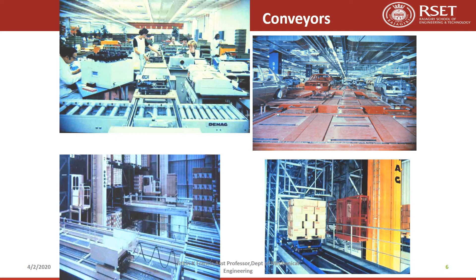Here we see the different types of conveyors. On the left top, we can see the roller conveyor in operation with people working between different stages. On the right side, we see a conveyor of a huge size used in an automobile industry. Conveyors are widely used in different kinds of industries for bulk movement of a fixed nature.